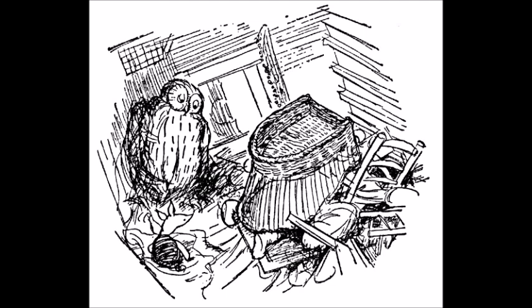That was all, said Pooh. Owl coughed in an unadmiring sort of way and said that if Pooh was sure that was all, they could now give their minds to the problem of escape. Because, said Owl, we can't go out by what used to be the front door. Something's fallen on it.